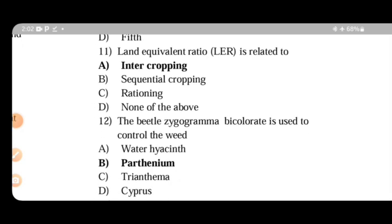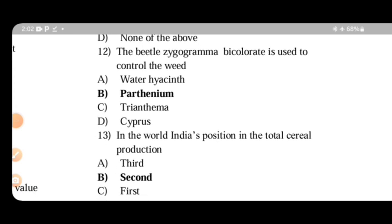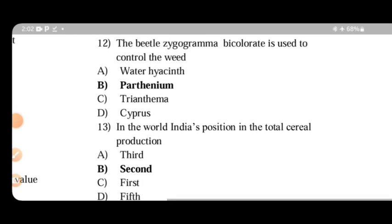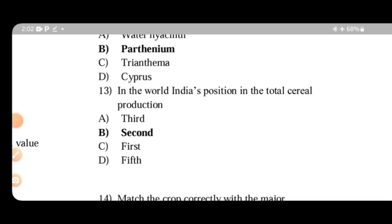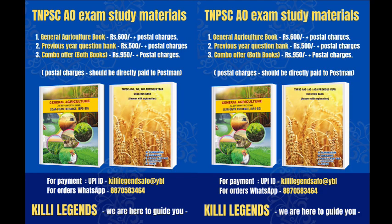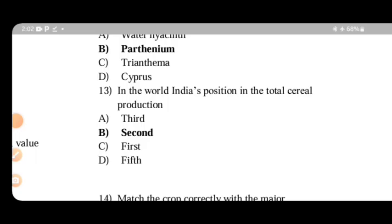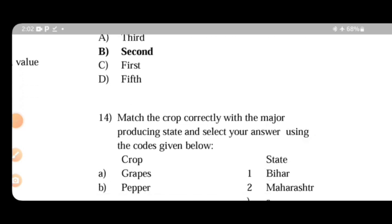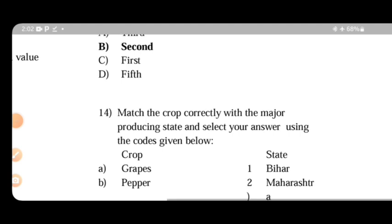The beetle Zygogramma bicolorata is used to control parthenium. This is one type of biological control. Next. India's position in total cereal production is second position. You can check and revise.